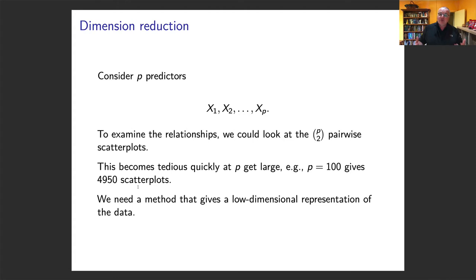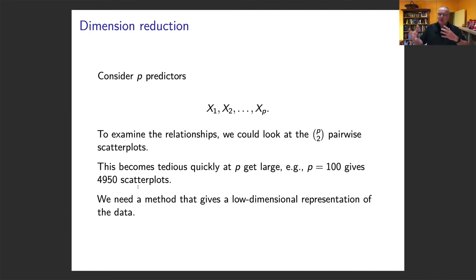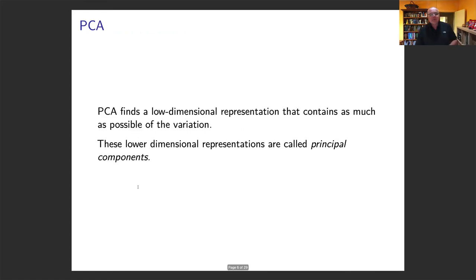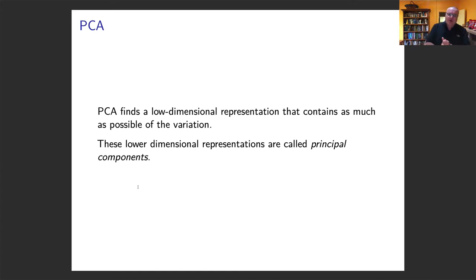If I had a hundred predictors — and we can get much more than this — we'd have 4,950 scatterplots. It would be really nice if we could take all those relationships and all that variability and reduce it down to fewer comparisons. PCA is going to find a low-dimensional representation that contains as much as possible of the variation, and these low-dimensional representations are called principal components.